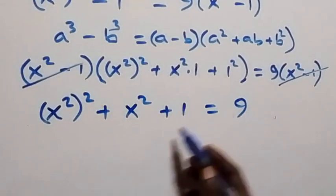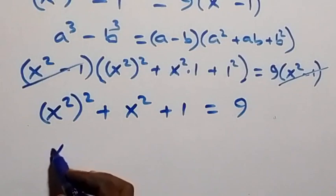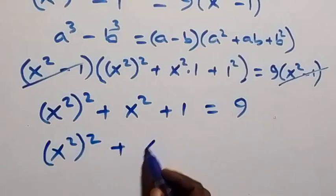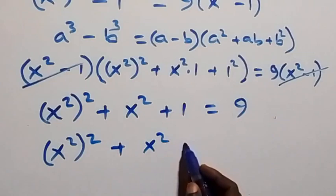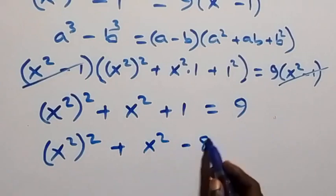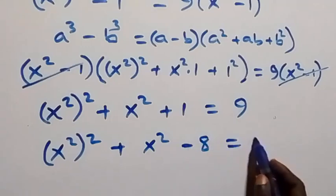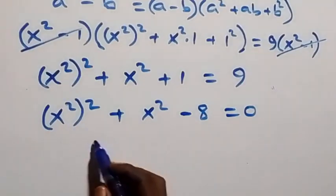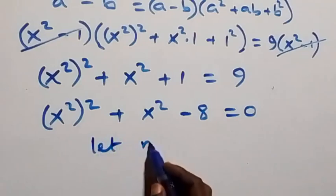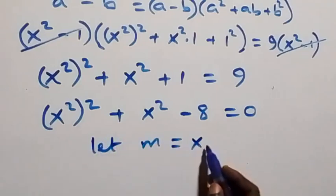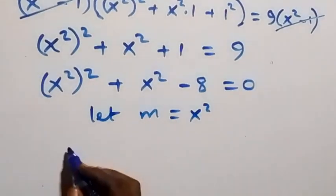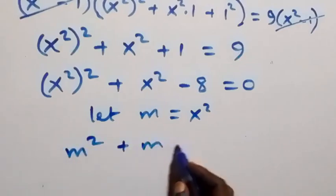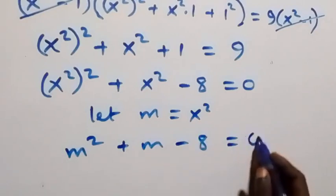Taking 9 to this side, we have x⁴ plus x² plus 1 minus 9 equals to 0, that is x⁴ plus x² minus 8 equals to 0. We can use a letter to represent x². So let m equal x². This equation now becomes m² plus m minus 8 equals to 0.